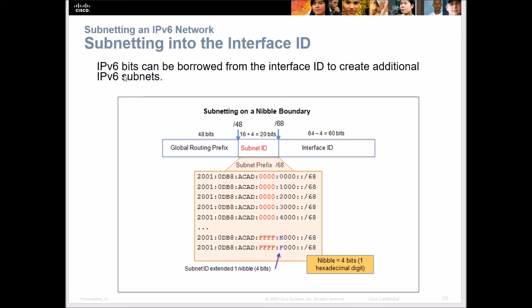IPv6 bits can be borrowed from the interface ID to create additional IPv6 subnets in large networks. A nibble is four bits — that's one hexadecimal digit. So you borrow one nibble, one hexadecimal digit, which is four bits. In IPv4, borrowing one place is one bit; here in IPv6 we're borrowing four bits in hexadecimal. You can borrow over into the interface ID area if you need more subnets.